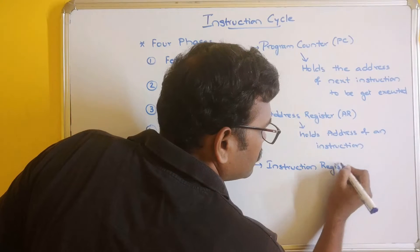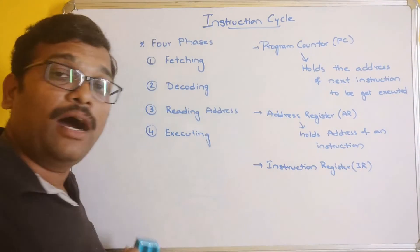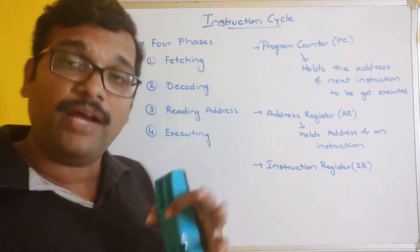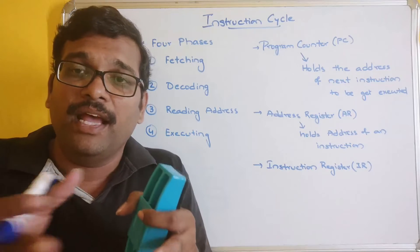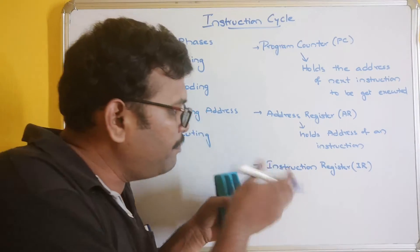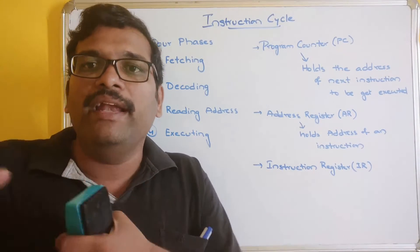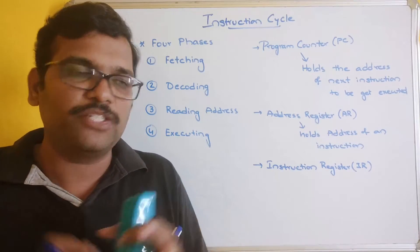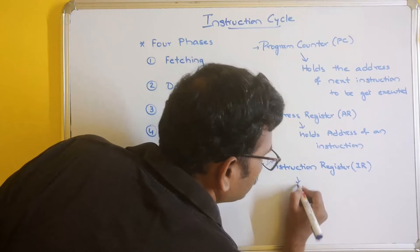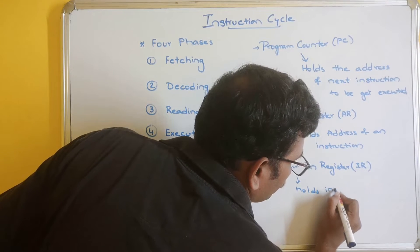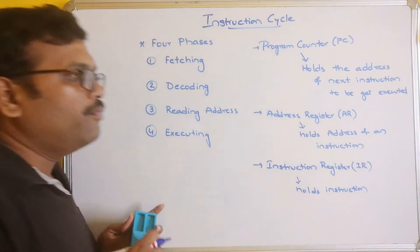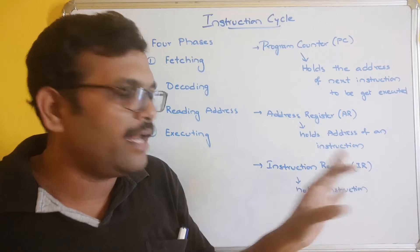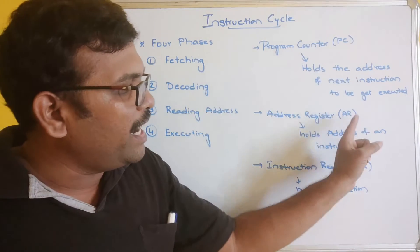The third concept is the instruction register, represented as IR. This register holds the instruction details. As discussed in our previous session, an instruction format has three parts: the opcode, the address, and the direct or indirect mode bit (I). The complete details of the instruction are stored in IR. We will use PC, AR, and IR across all four phases.